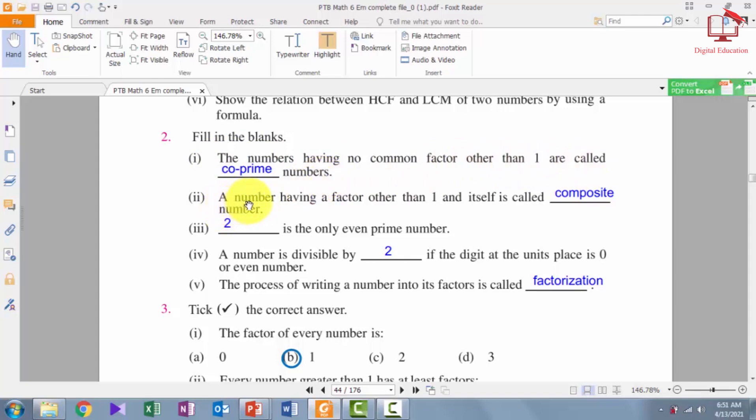2. A number having a factor other than 1 and itself is called composite number.